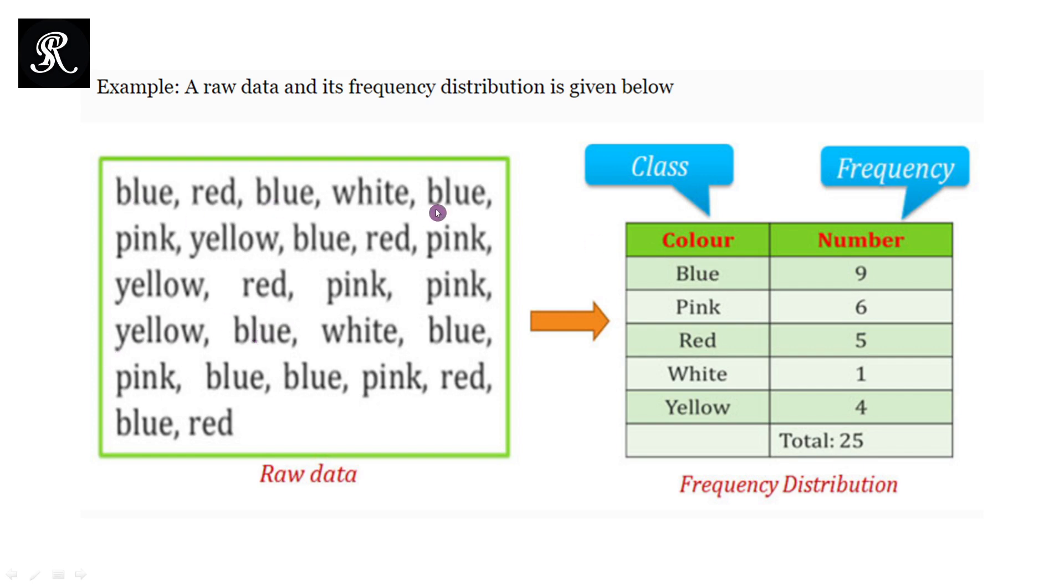So let us collect the number of blue colors. How many times appears in this raw data? One, two, three, four, five, six, seven, eight, and nine.